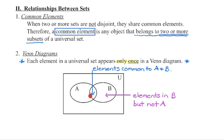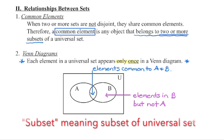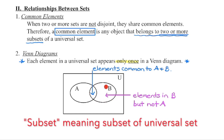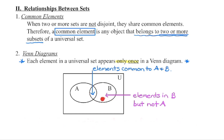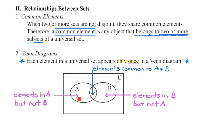This entire oval represents subset B, so this section represents the elements within subset B that do not include elements in A. Similarly, the oval on the left represents set A, so this section represents A only — all elements in A but not in B.